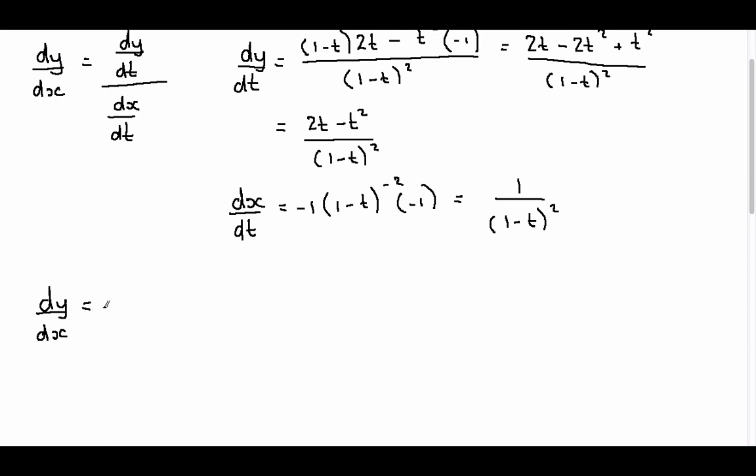It is simply (2t minus t squared) over (1 minus t) squared, divided by 1 over (1 minus t) squared.